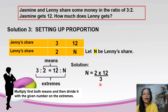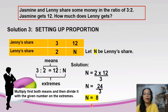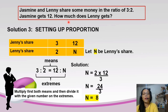So we have: n equals 2 times 12 divided by 3. Now let's find the answer: 2 times 12 equals 24, so n equals 24 divided by 3, which equals 8. The value of n is 8. Therefore, answering the question — how much does Lenny get — Lenny's share is 8.